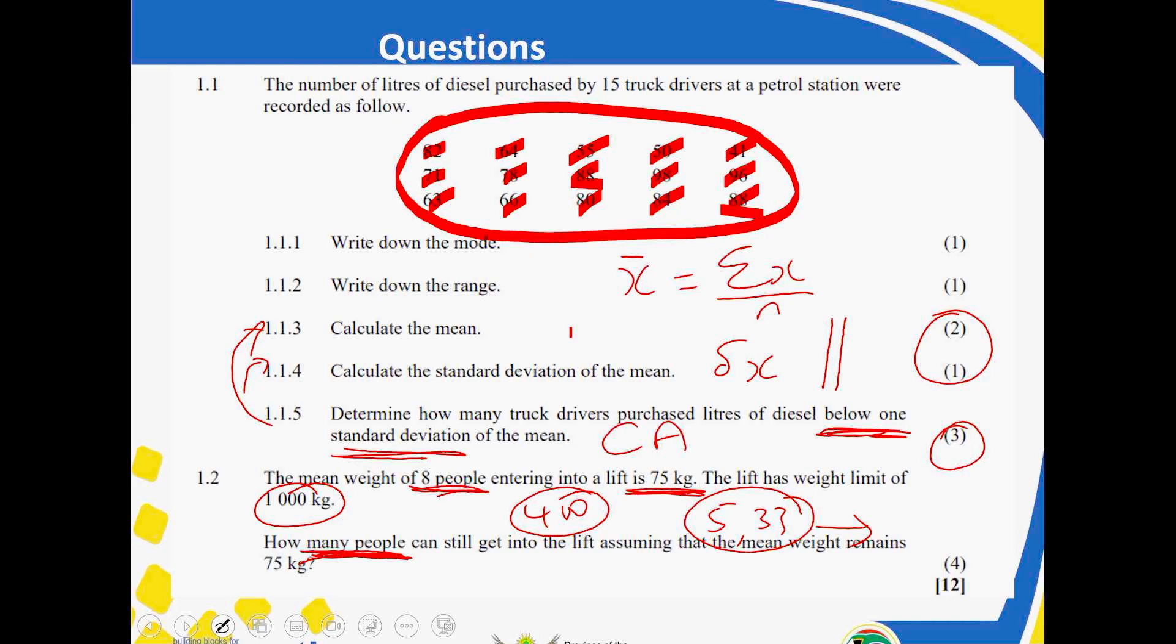If you round up, you're going to have six people with six, seven, 75 kilograms, and it will be more than 1,000. And it will make the lift not to function well. That's one thing that you must know. So, we round down to five. That's good. Right. Then, we're moving on to the question two.